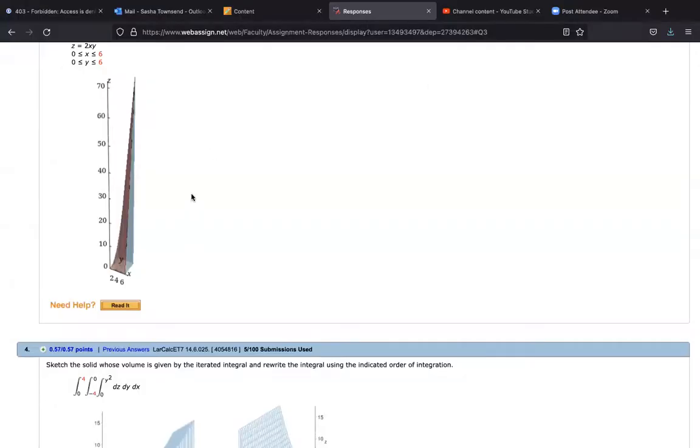Now we were actually given a graph of the volume that we're interested in. So I want to share that with you before we find these bounds. So here's our graph. We see that we're starting in the xy plane. That's where z is equal to 0. And then we're going up to the surface z equals 2 times x times y.